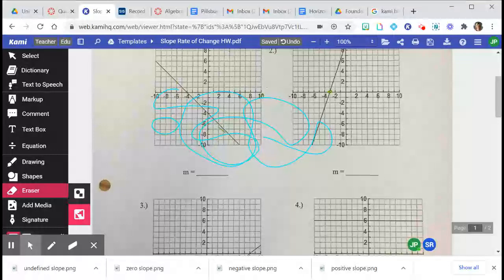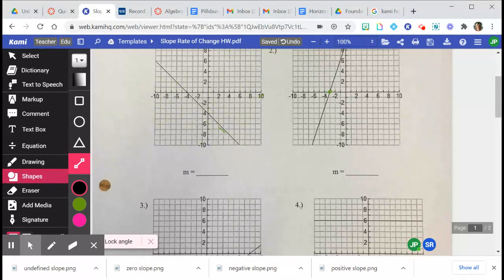There are shapes that you can add. So there are circles, there are lines. The lines we can use for slope. So we can use the lines to draw our rise over run and things like that.